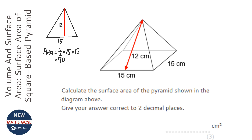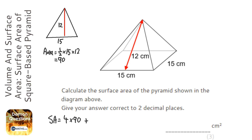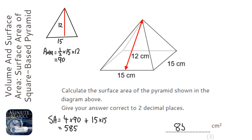The surface area is four times 90, because there are four triangles, plus the area of the square at the bottom which is 15 times 15. So 4 times 90 plus 15 times 15 equals 585. The answer is 585 centimeters squared.